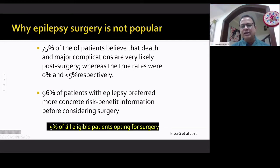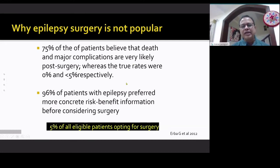Only 5% of eligible patients opt for surgery. That's because 75% of patients believe that death and major complications are very likely post-surgery, whereas the truth is the death rate is 0 to 1% and the complication rate is less than 5%. There is a myth among the public that surgery is dangerous. 96% of patients who want surgery need to know the risk-benefit information of the particular center, not what is reported in the literature. So what is important is to have the complication rate, morbidity rate, and mortality rate of the center doing the surgery, so that the patient can get convinced to undergo surgery there.